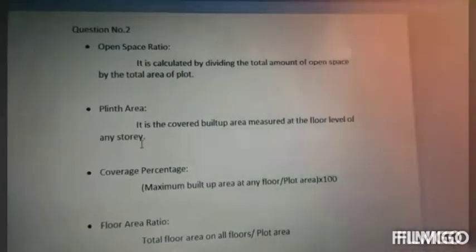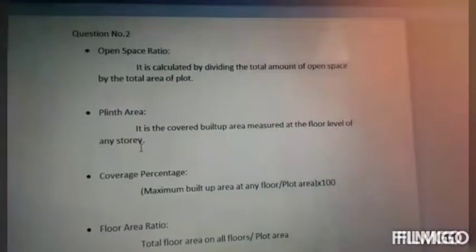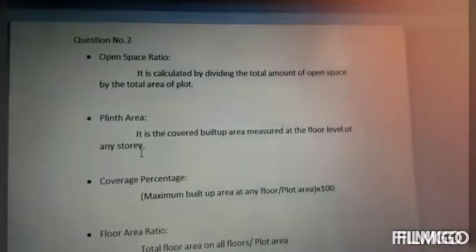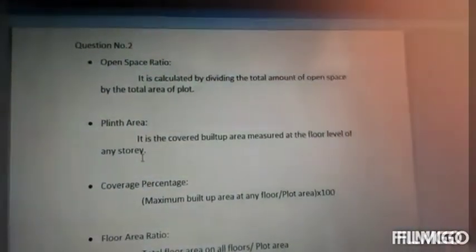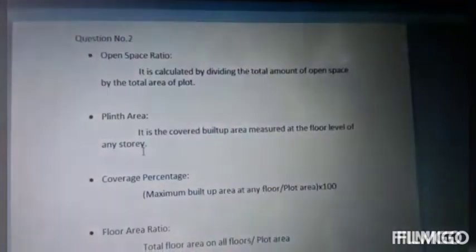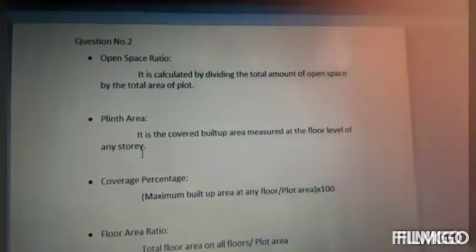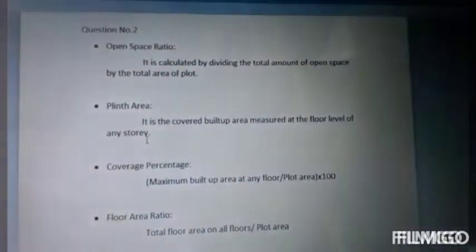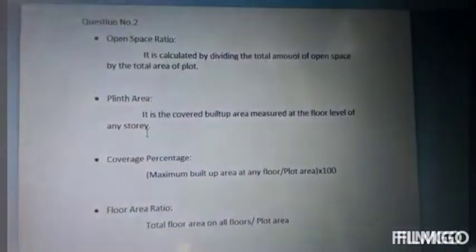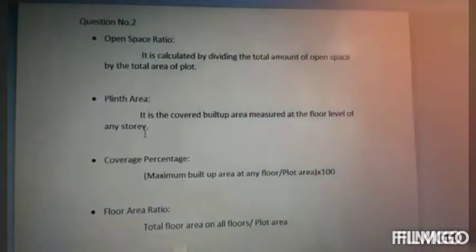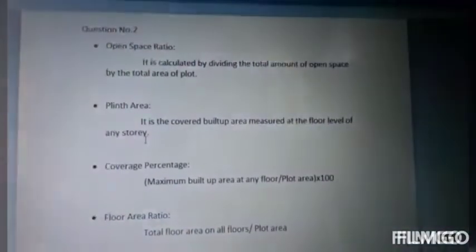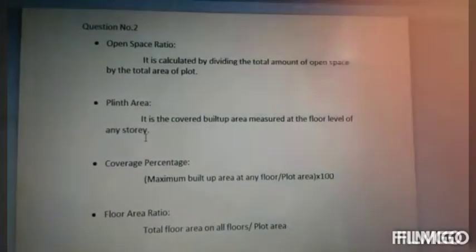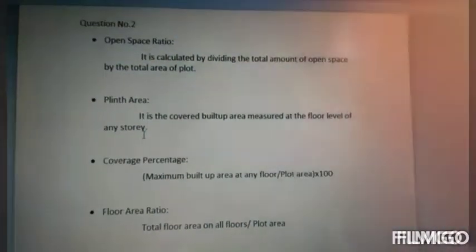Open Space Ratio is calculated by dividing the total amount of open space by the total plot area. Plinth Area is the total covered built-up area measured at the floor level of any storey. Coverage Percentage is the maximum built-up area at any floor divided by the plot area, multiplied by 100. Floor Area Ratio is the total area on all floors divided by the plot area.